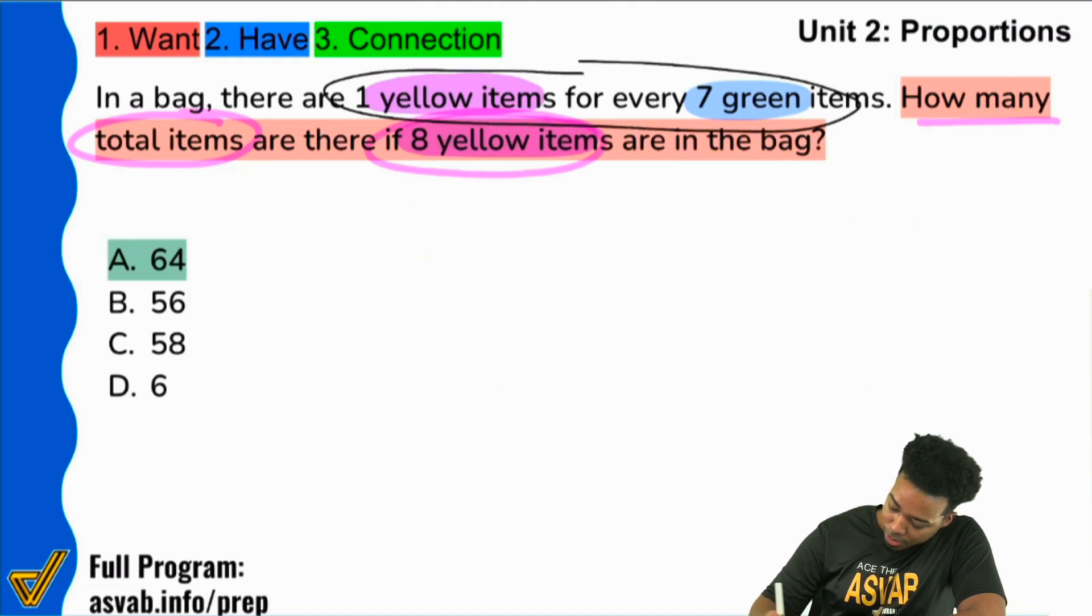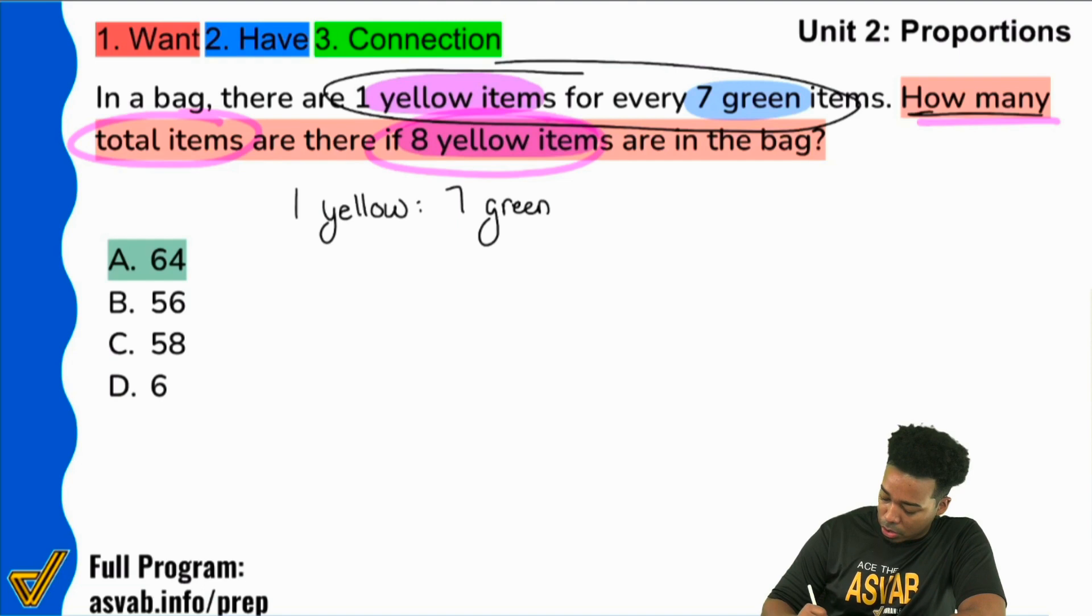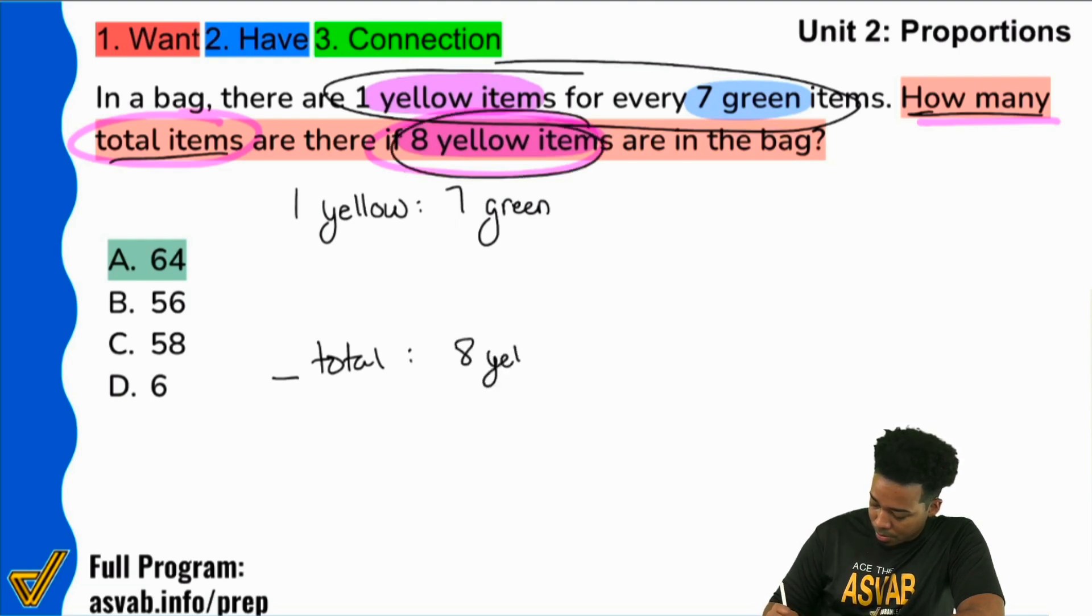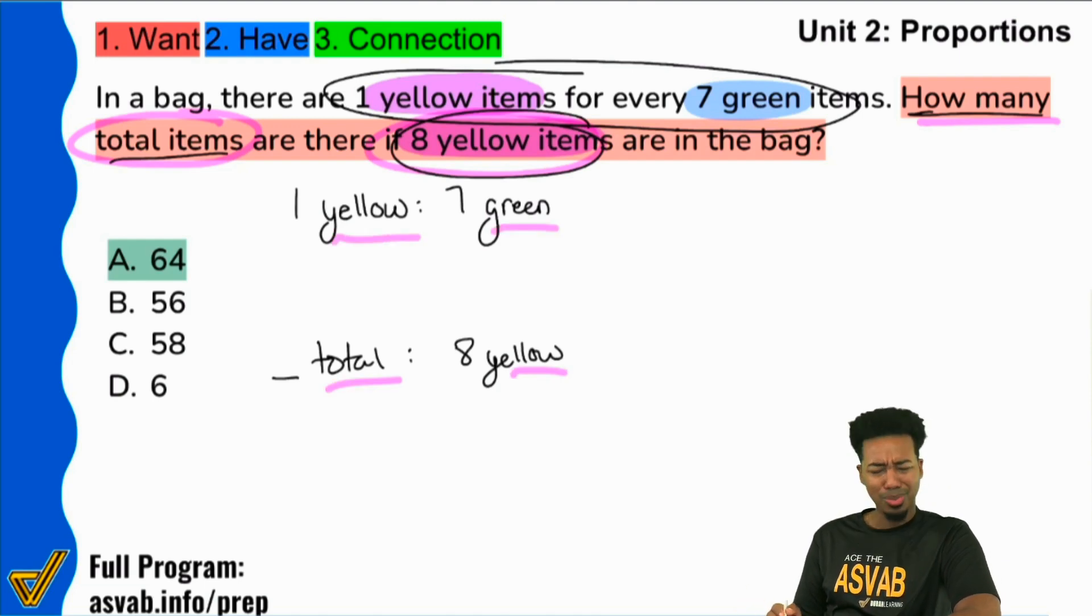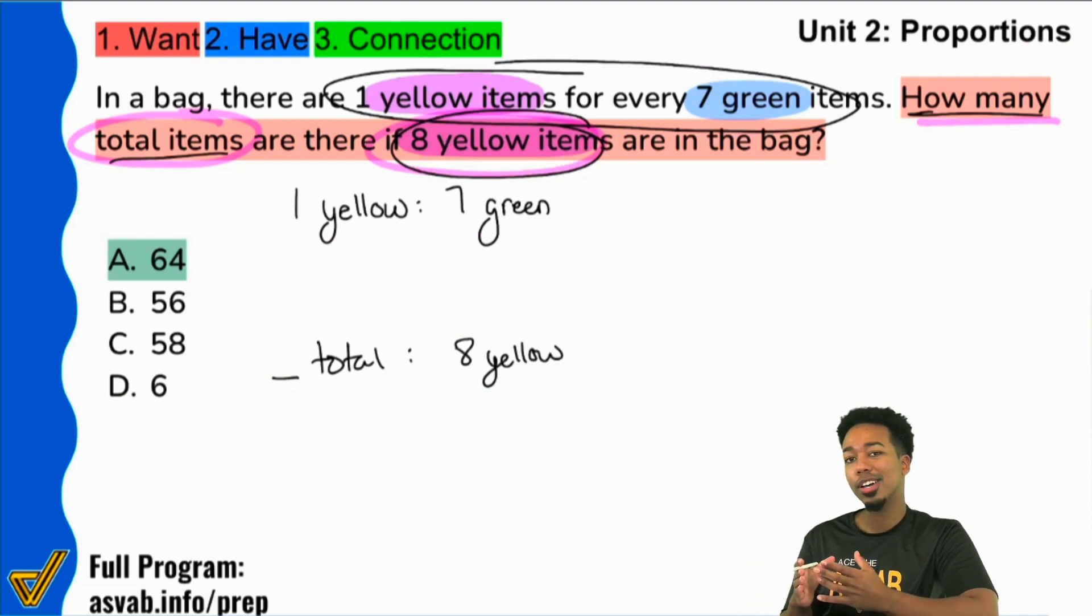So we have again, one yellow for every seven green. So one yellow for every seven green. And then here in the question, it says we're looking for how many total. So we see here we have a blank total for eight yellow. So if you notice this is kind of messed up, we have yellow, green, total yellow, that's not compared the same way. So that's what you have to pay attention to. Once you pay attention to that, you notice that you're looking for blank total with eight yellow. So what I need to do is I need to set this one up with total and yellow being compared as long as you compare the same things in the same way. You're fine.